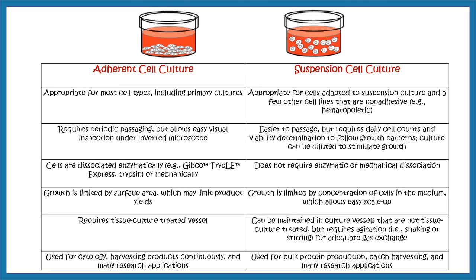There are two main cell culture paradigms: adherent cell culture and suspension cell culture. In adherent cell culture, cells adhere to the plate, which often needs to be coated with extracellular matrix proteins such as laminin or fibronectin to provide a substratum for growth. Many cells, however, don't need this — for example, blood cells float in vivo, so they can also float in culture. Suspension cell culture is generally easier to handle and subculture than adherent culture.